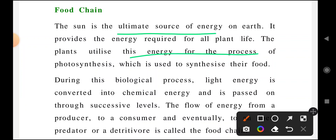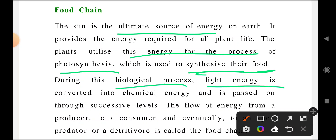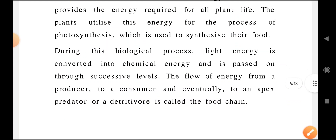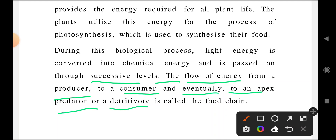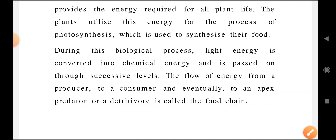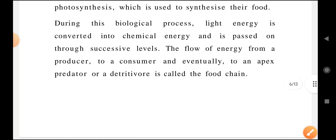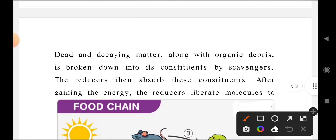This energy is used in the process of photosynthesis for the purpose of making food. During this biological process, light energy is converted into chemical energy, and it is passed on through successive levels. The flow of energy from producer to consumer and eventually to an apex predator or detritivore is called a food chain.